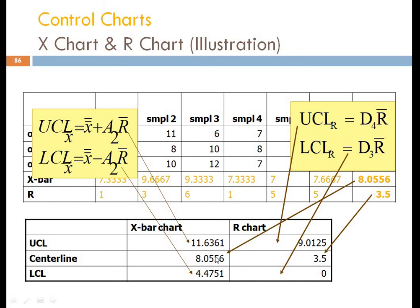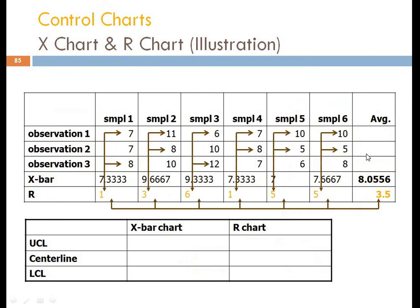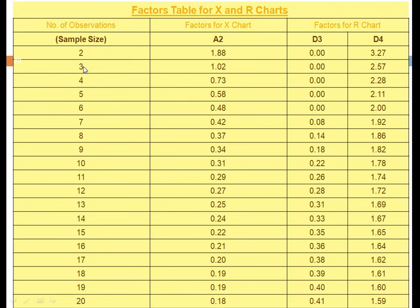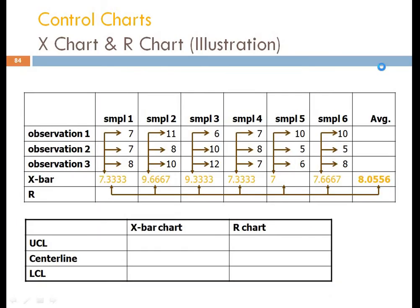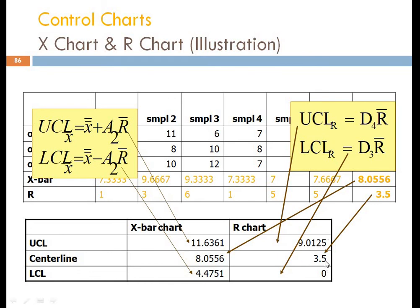For the R chart: UCL = D4 × R bar = 2.57 × 3.5 = 9.0125, and LCL = D3 × R bar = 0.00 × 3.5 = 0.00. The central line is R bar = 3.5. So we now have the upper control limit, central line, and lower control limit for both the X chart and R chart.